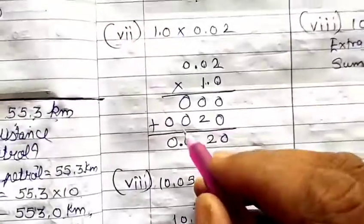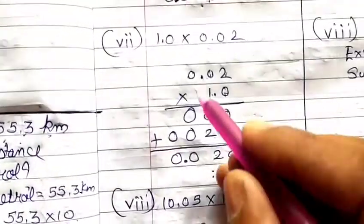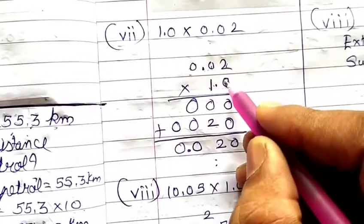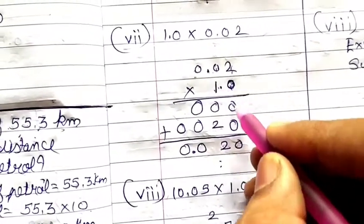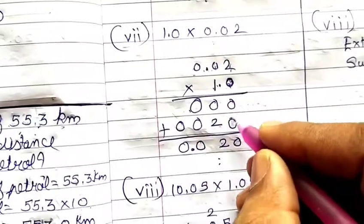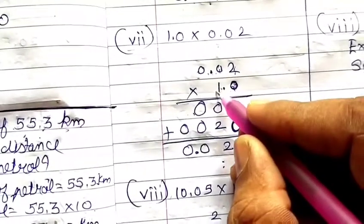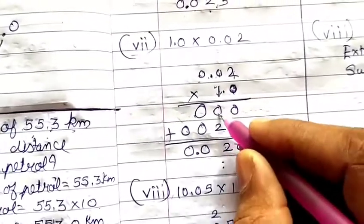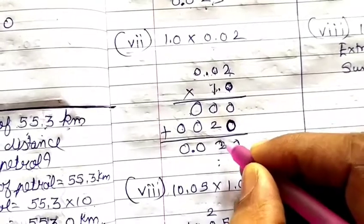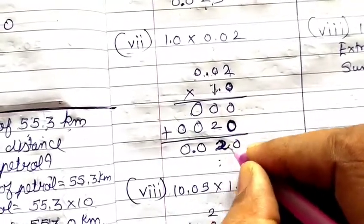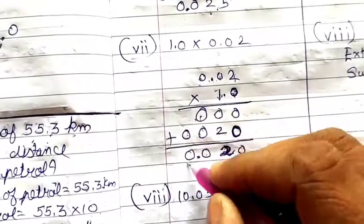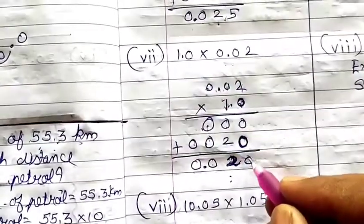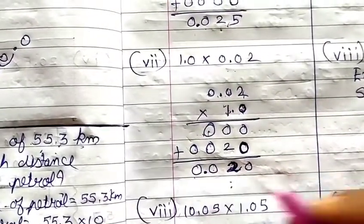Then 1.0 into 0.02. Multiply 0 by 2, 0, 0 — all zeros. Place a zero by default, then multiply 1 by 2 is 2, 1 by 0 is 0, 1 by 0 is 0. Adding: 0 plus 0 is 0; 0 plus 2 is 2; zeros remain. Count decimals: 1 digit in 1.0 and 2 digits in 0.02, total 3. Leave 3 digits from the last and place your decimal — answer is 0.020.